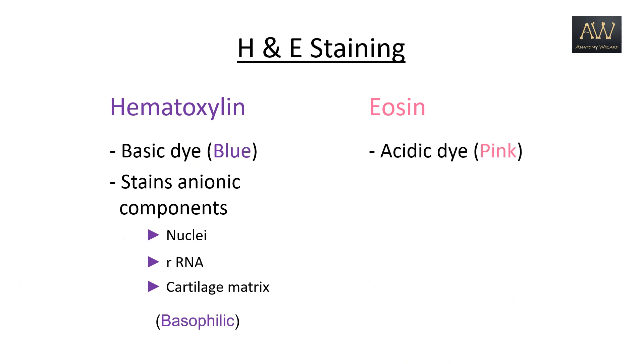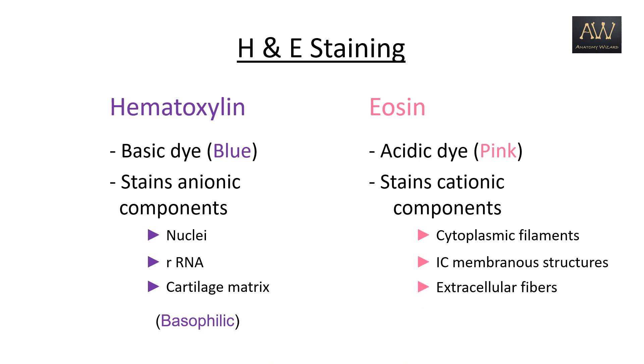On the other hand, eosin is an acidic dye that stains the cationic components such as cytoplasmic filaments, the intracytoplasmic membranous structures, and extracellular fibers. These are thus eosinophilic structures.